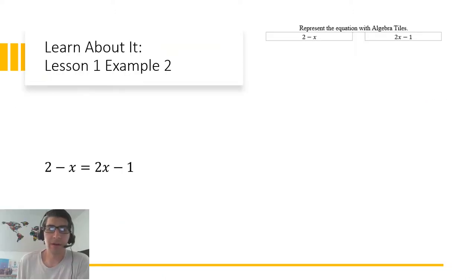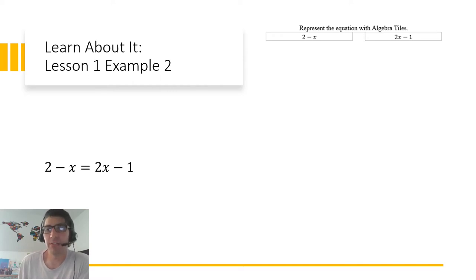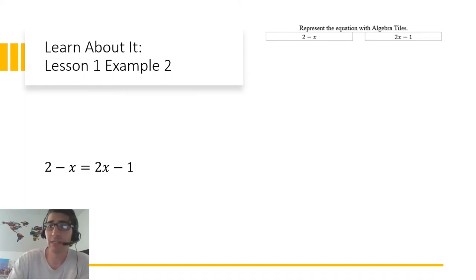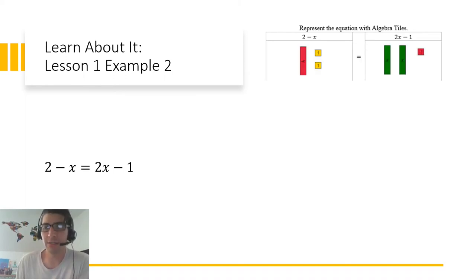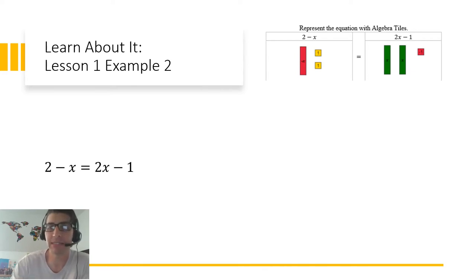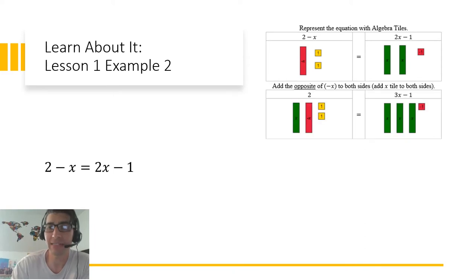Let's learn about it. We're going to represent 2 minus x equals 2x minus 1 with algebra tiles. 2 minus x is the same as 2 plus negative 1x, and 2x minus 1 is the same as x plus x plus negative 1. I'll use those tiles to represent my two sides. To solve, I need to figure out the value of one green x tile. I'm going to eliminate the negative 1x — the red x tile — on the left-hand side by adding its opposite, a positive x, to both sides.